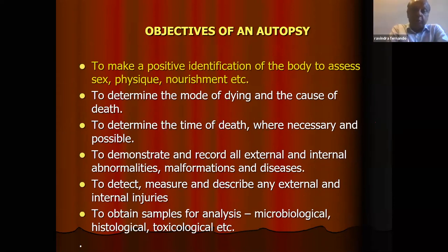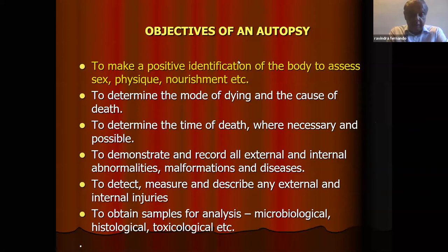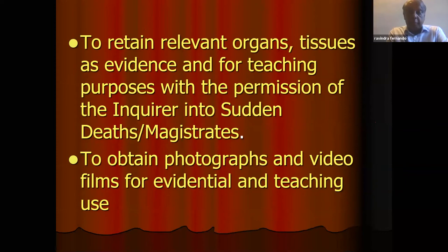We are asked to do post-mortem autopsies. Why do we do them? To make a positive identification of the body, to assess sex, physique, and nourishment; to determine the mode of dying and the cause of death; to determine the time of death where necessary and possible; to demonstrate and record all external and internal abnormalities, malformations and diseases; to detect, measure and describe injuries. At the post-mortem, we retain relevant organs and tissues as evidence and for teaching purposes with the permission of the magistrate, and we also obtain photographs and video films for evidential and teaching use.